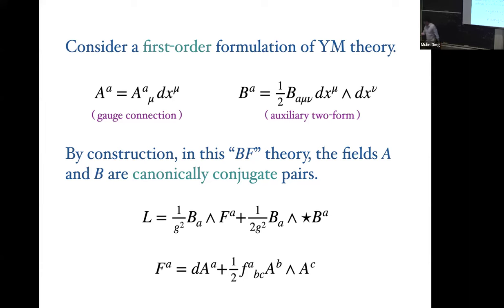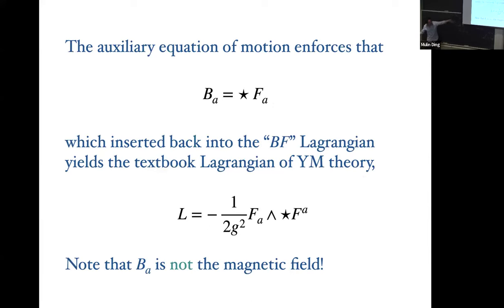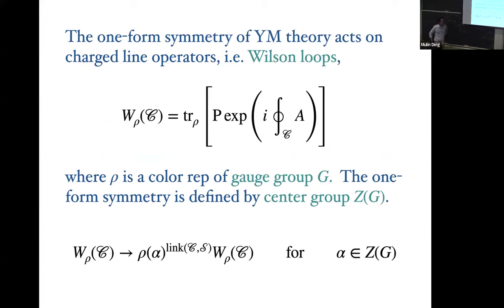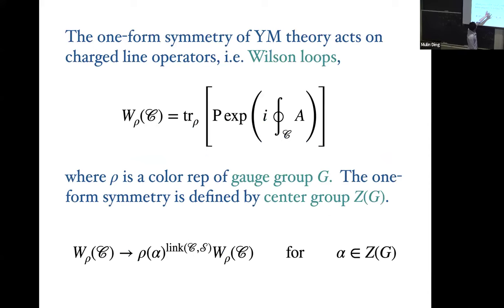The charged operator is the non-Abelian Wilson loop — the path-ordered exponential of the non-Abelian gauge field integrated over the contour, taking the trace in some representation rho. Rho could be the fundamental or whatever representation you wish to take. As is famous, the one-form symmetry is valued in the center of the gauge group — for SU(N) that would be Z_N.